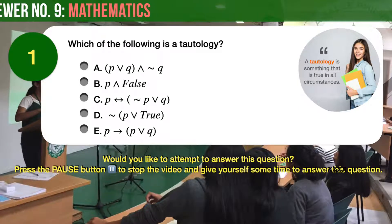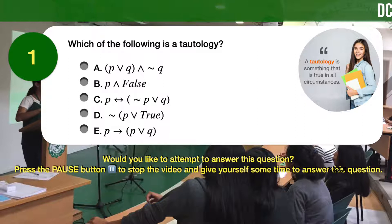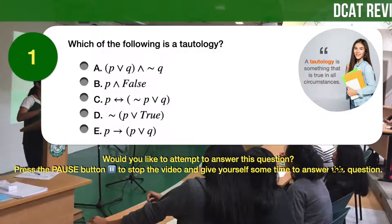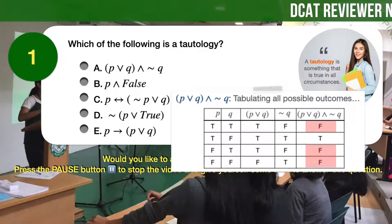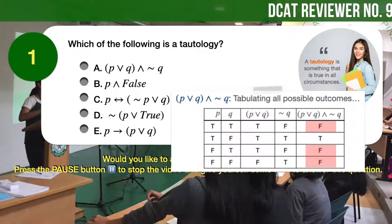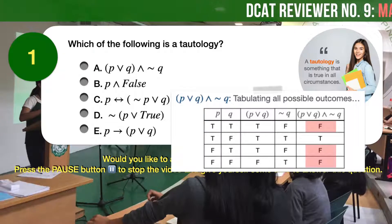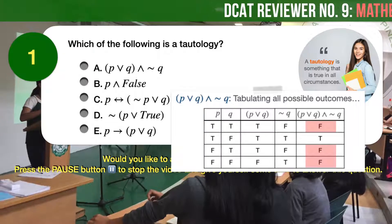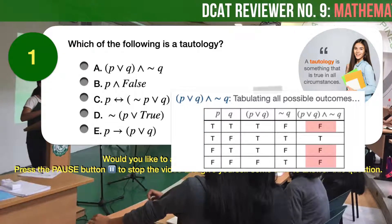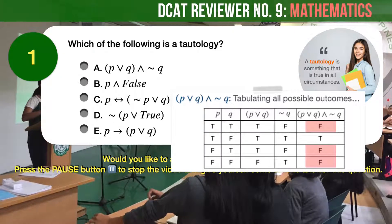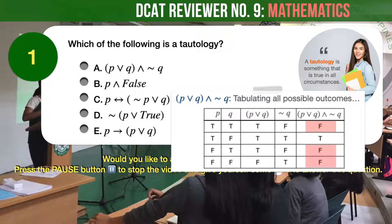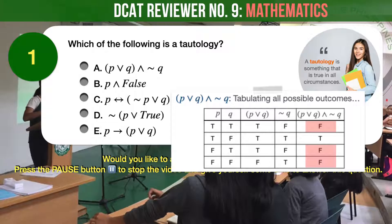Let's examine answer choice A by tabulating all of its possible outcomes. We have already done the tabulating for you, as shown. A is not the correct answer since not all its possible outcomes are true and therefore it is not a tautology.